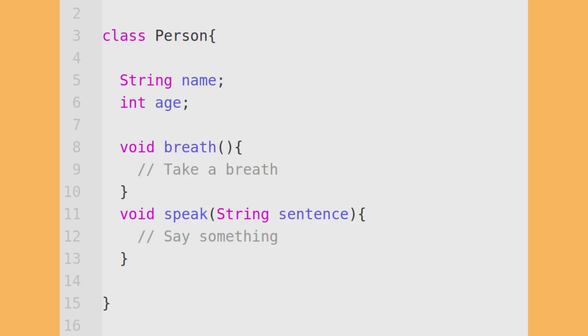I'd be an object of class Person — the blueprint that states all people have data such as name and age, and maybe methods like breathe or speak.